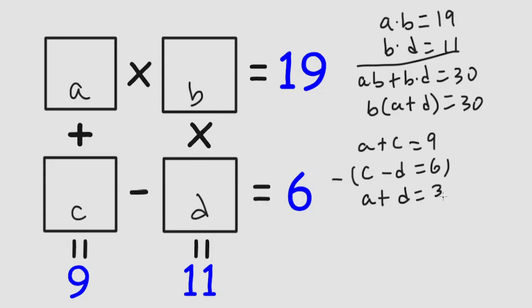A plus D is equal to 3, and we have an A plus D over here. So B times A plus D, which is 3, is equal to 30. So B is equal to 10.